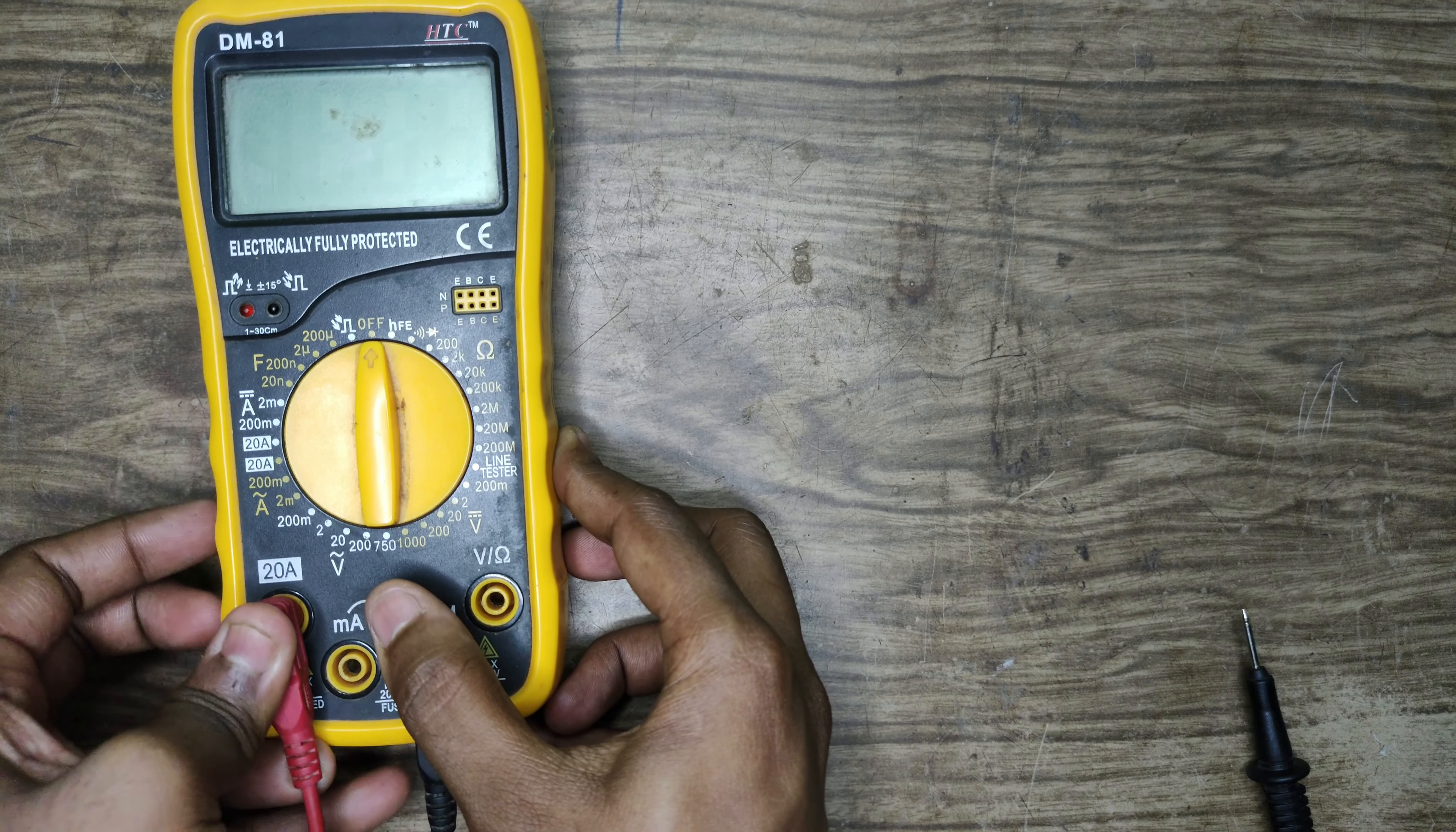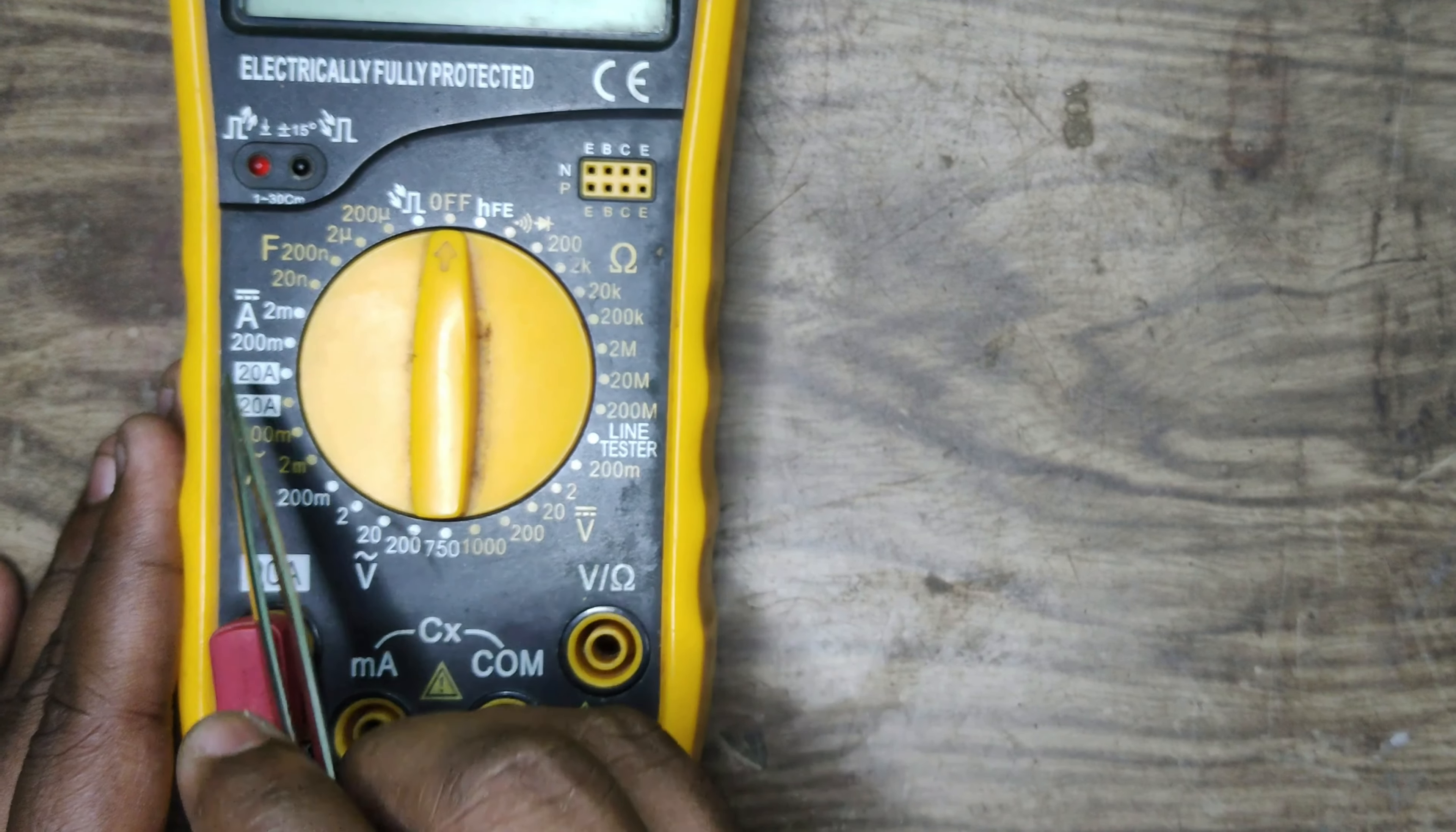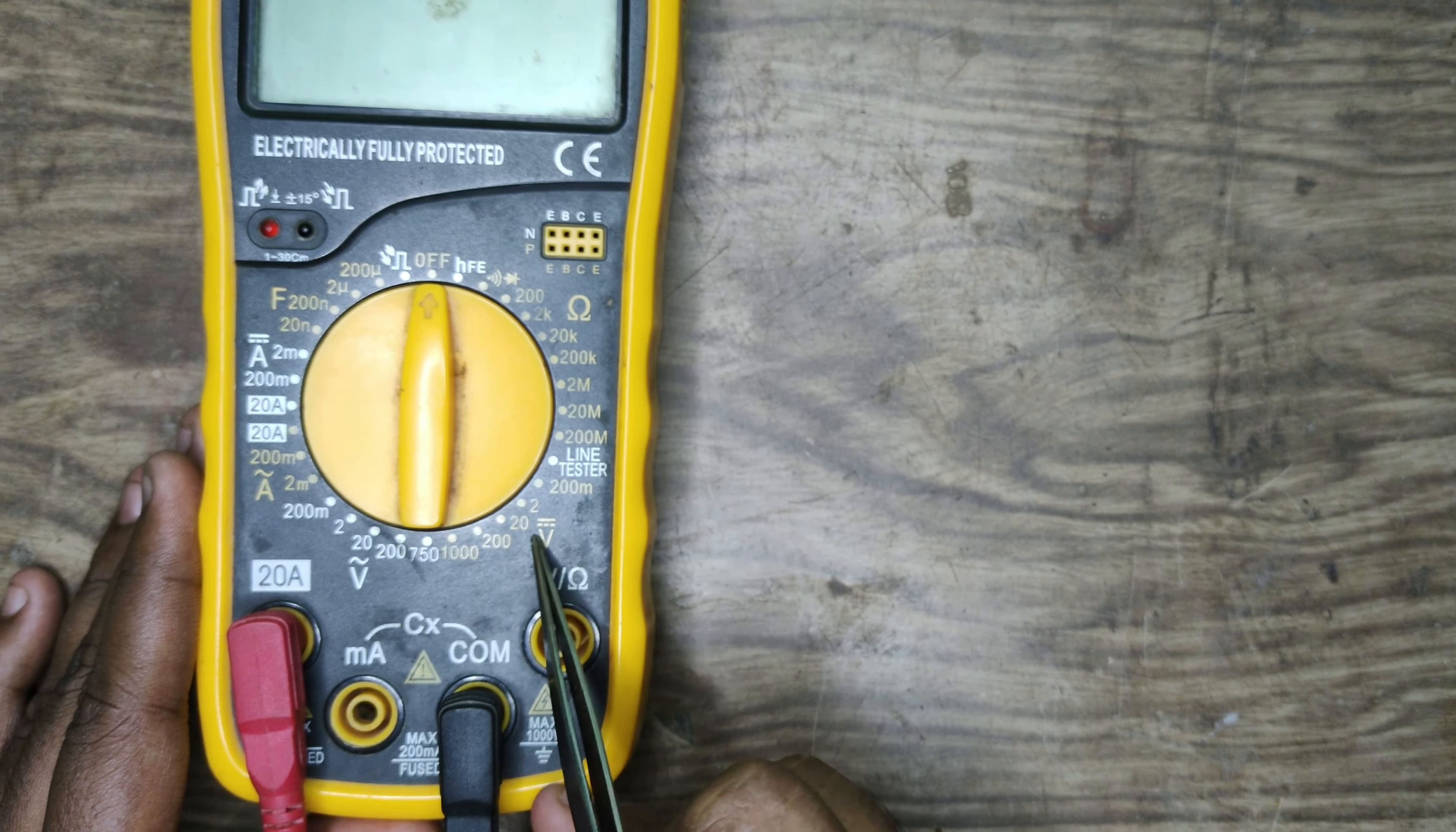I am going to measure DC current. In DC current, the two lines represent DC. Now you can see here it's AC. This is AC voltage, and this is DC voltage. When you measure current...